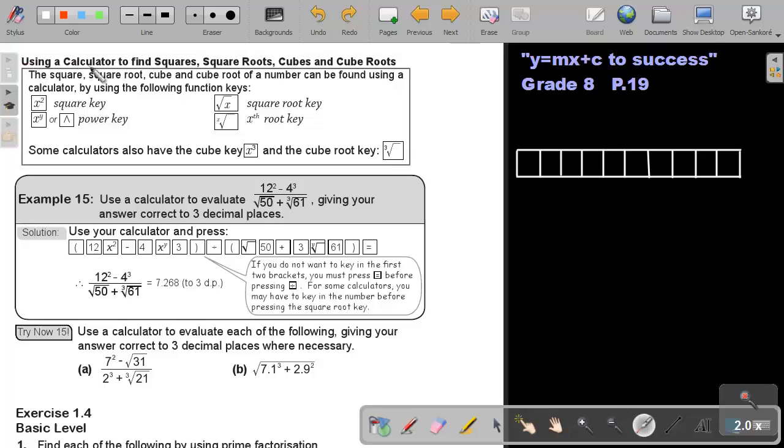Part 16. Using a calculator to find squares, square roots, cubes and cube roots. You will find this on page 19 in the Namibian Mathematics Guide 8 textbook, y equals mx plus c to success.